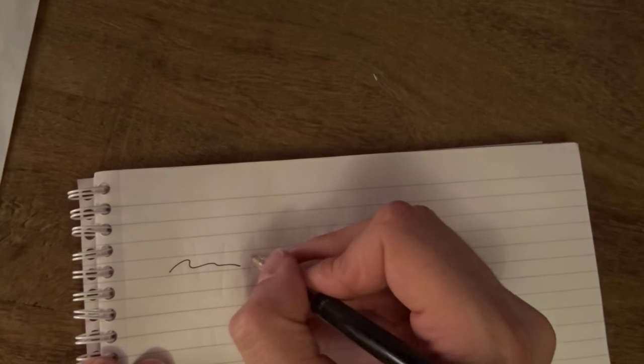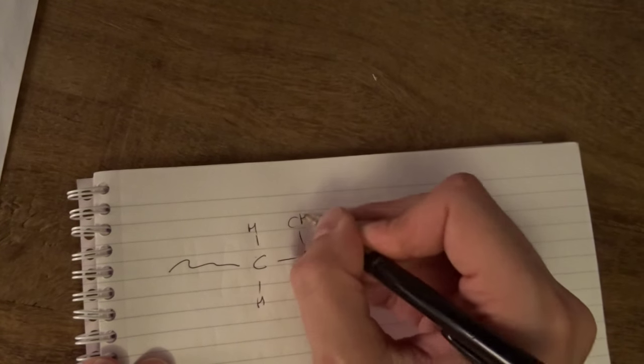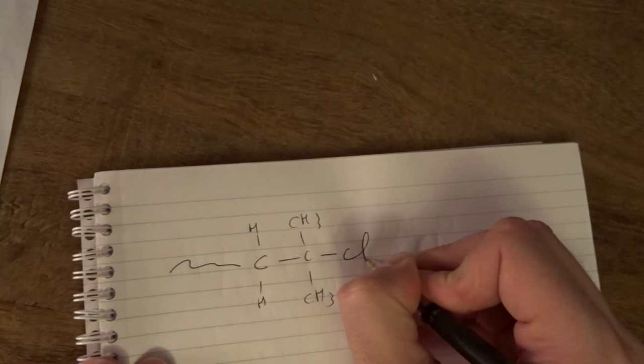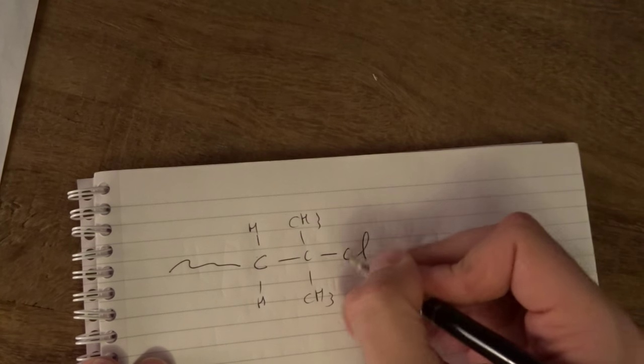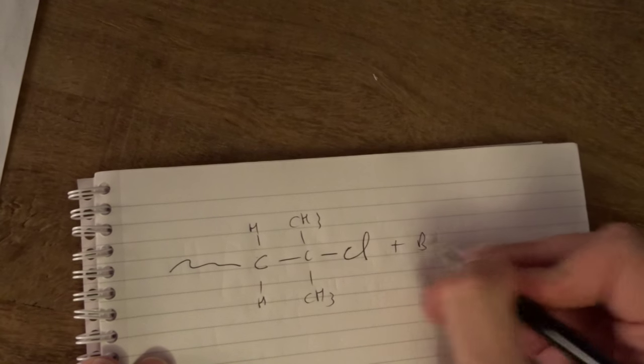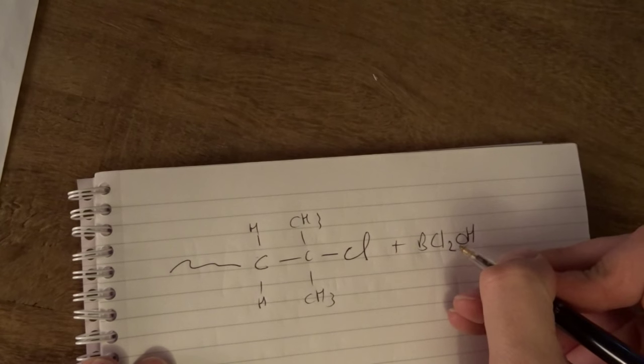This will yield a polymer like this: H, H, C, C, CH3, CH3, Cl. So this is from the initiator plus BCl2OH, which is neutral. That's it.